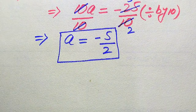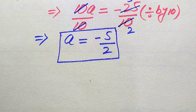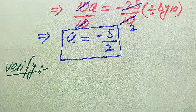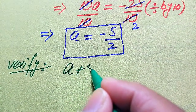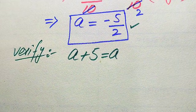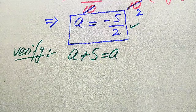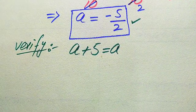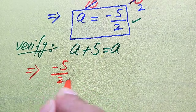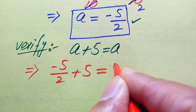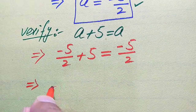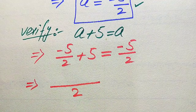In the next step, we verify whether this value of a satisfies the given equation. We copy down the original equation: √(a + 5) = a. We substitute a = −5/2 into both sides of the equation to check its behavior. On the left-hand side we have √(−5/2 + 5), and the right-hand side is −5/2.